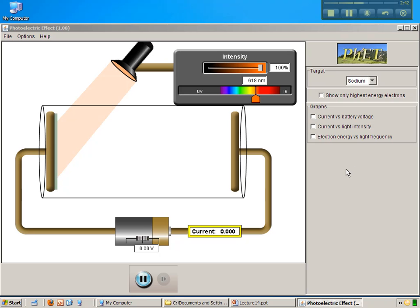So here what we have is the setup that I described that Thompson used, where you have an electrode that you shine light on and another electrode, and you can apply a voltage between these two using a battery. Here I've set the voltage to be zero, so the battery basically does nothing, and we have a current meter.